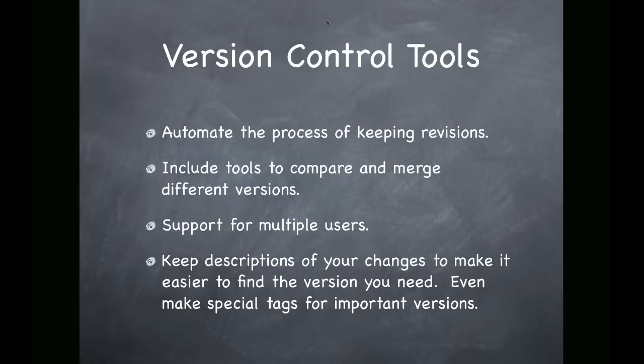They make it much easier to compare different versions of a document and when you save your changes, you can record a description of the change that you made to make it easier to find when you're looking for it later. If you've got multiple people contributing to a document, a version control system can really save you a lot of time because most of them support multiple users right out of the box.